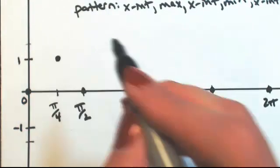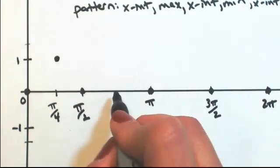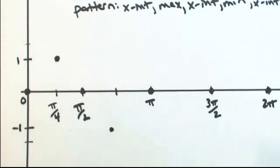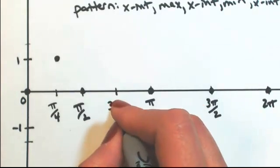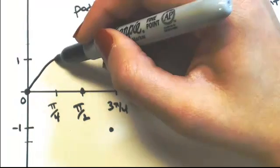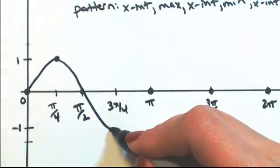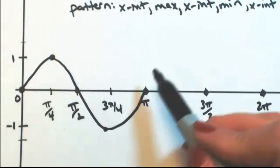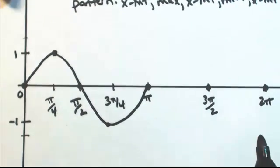Okay, so at pi over 4, we're going to get our max back to an x-intercept. So then between pi over 2 and pi, that's going to be our min, back to an x-intercept. Okay, so this is one cycle. If I were to continue this again, we would have our second cycle.